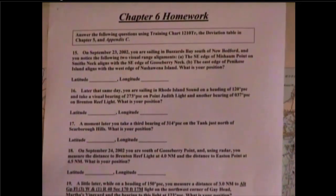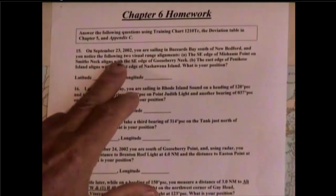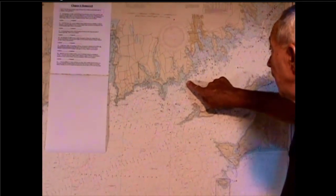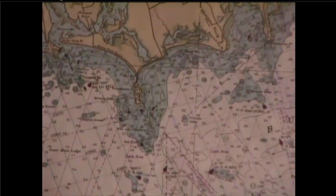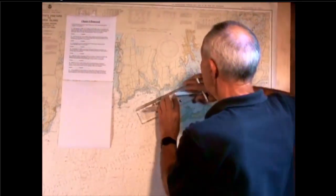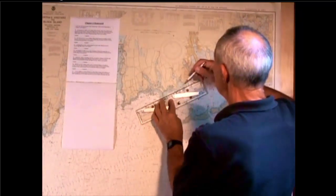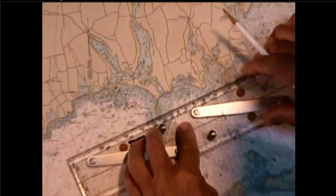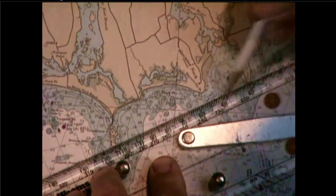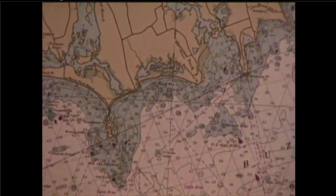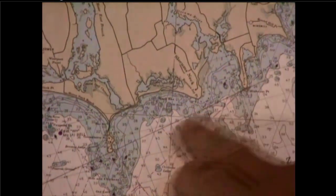Range A: the southeast edge of Michouan Point on Smith's Neck aligns with the southeast edge of Gooseberry Neck. Over here we have Michouan Point right here on Smith's Neck, and right here we have Gooseberry Neck — that's the southeast edge of that. So what we're going to do is draw a line between those two points, and that's going to be one of our projected alignments. I line up my straight edge with Smith's Point and the southern edge of Gooseberry Neck, and draw in a line. Since I can see those two points and they line up, I know that I am somewhere on this line.